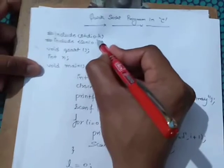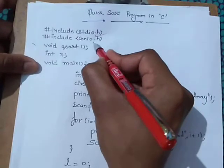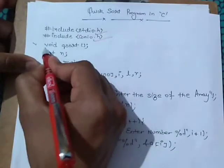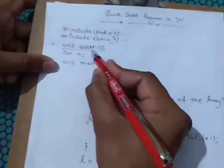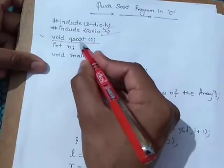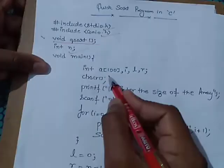Now let us see the program of quick sort. So we have to include a file stdio.h. Again we have to include a file conio.h. Here we declared a function in which we will implement the logic of quick sort. We have taken a global variable n.